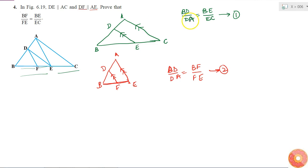Now what can I see? In equation 1, I have BD by DA is equal to this, and in equation 2, I have BD by DA is equal to this. So I can say that these two quantities will also be equal.